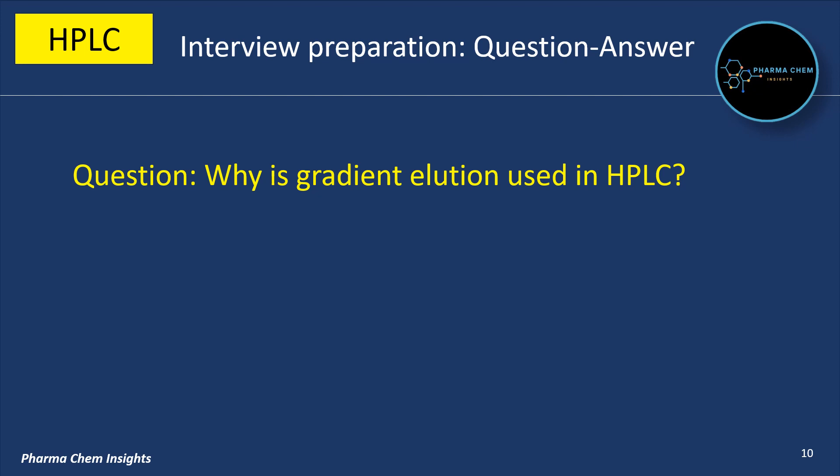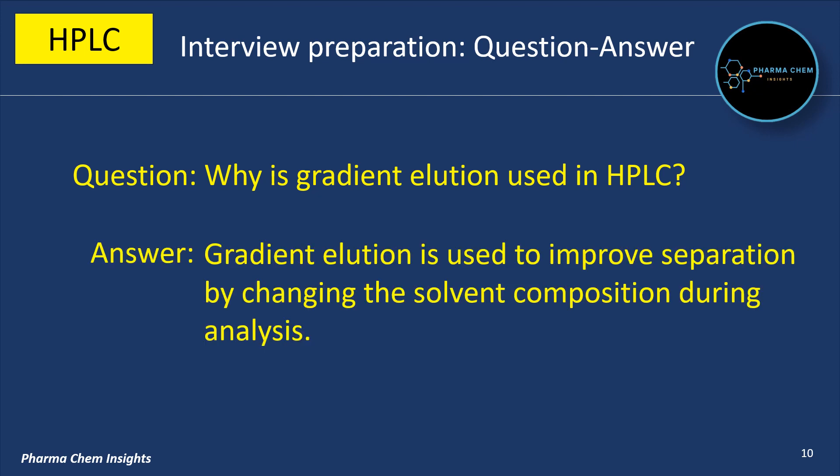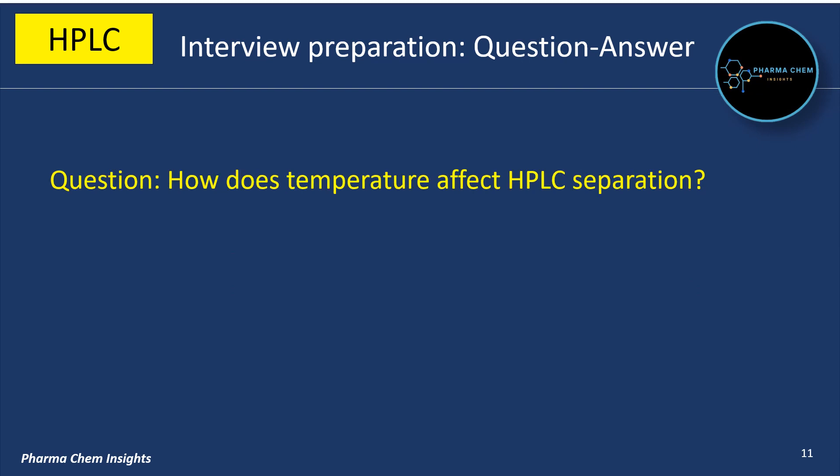Why is gradient elution used in HPLC? Gradient elution is used to improve separation by changing the solvent composition during analysis.